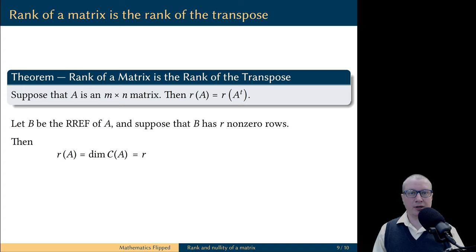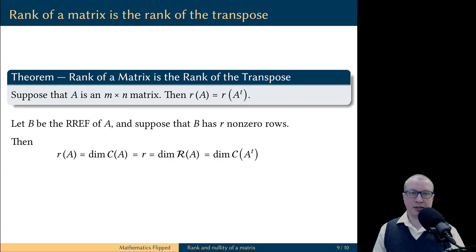However, the transposed non-zero rows of the reduced matrix are used to construct a basis for the row space. Therefore, the number of non-zero rows in the reduced matrix is equal to the dimension of the row space. Let's recall that the row space of a matrix A was defined as the column space of A transpose,